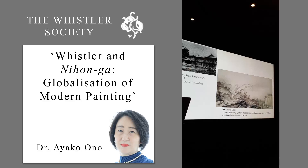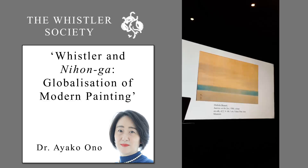Shunso entered the Tokyo School of Fine Arts in 1890, where he learned Japanese traditional brush strokes under Hashimoto Gaho's supervision. The representation of lines was important in traditional Japanese painting. However, Shunso began to adopt Western expression and worked on a new painting style, seeking new expression. According to Taikan's recollection, Okakura suggested that there might be a method to represent air and rays of light. Shunso, with Taikan and others, experimented with an expression without brush strokes and introduced Western painting techniques into Japanese painting.